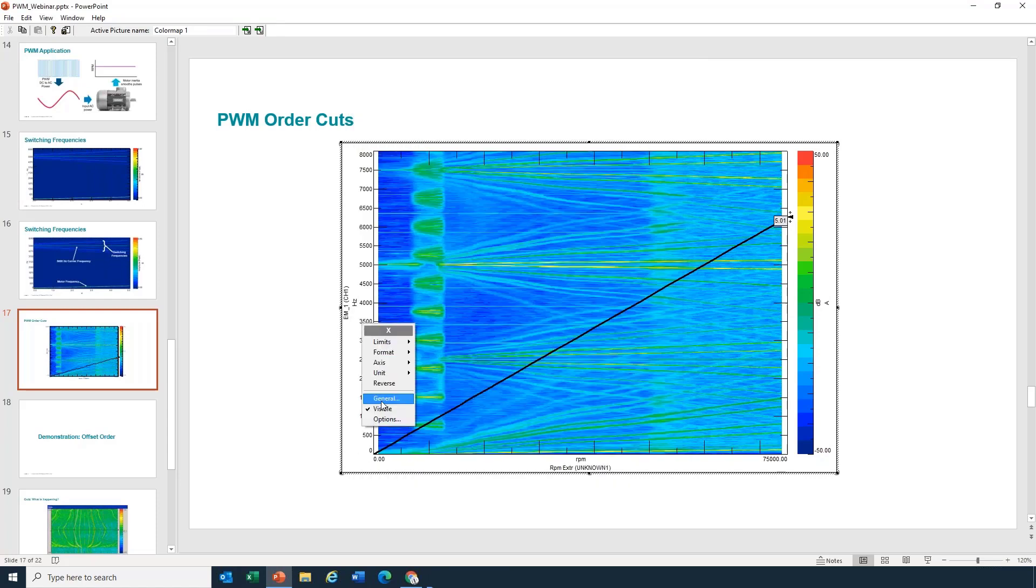If I want to analyze that, I did put on the numbers there. If I want to analyze this 5,000 hertz PWM signal, my order cursor doesn't quite line up. It goes through zero, zero here always. What do I do, man?